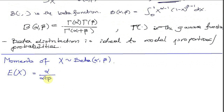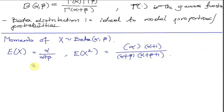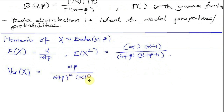The expected value of x is alpha divided by alpha plus beta. The second moment, the expected value of x squared, is alpha times (alpha plus 1) divided by (alpha plus beta) times (alpha plus beta plus 1). The variance of a random variable x which is beta distributed is equal to alpha times beta divided by (alpha plus beta) squared times (alpha plus beta plus 1).